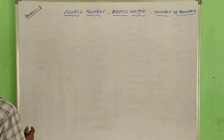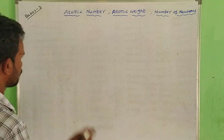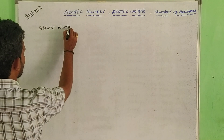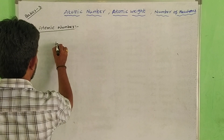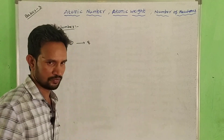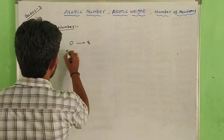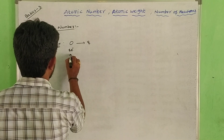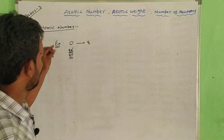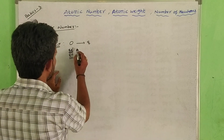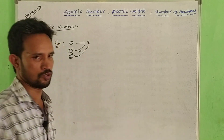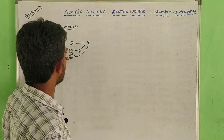So, what is atomic number? Here we have atomic number. Let's talk about atomic number. For example, oxygen — oxygen has atomic number 8, meaning 8 protons. So atomic number is the number of protons and number of electrons.